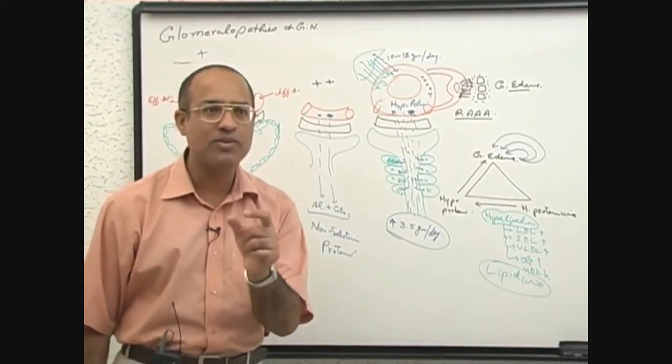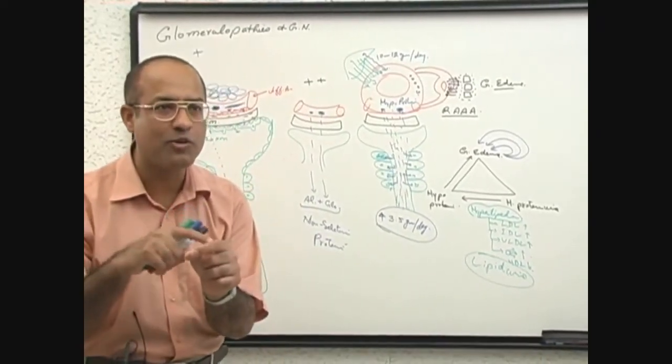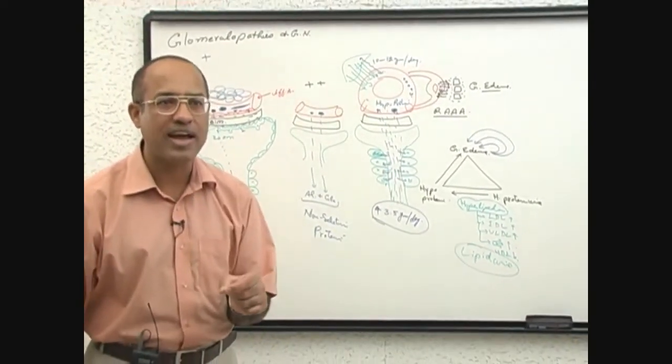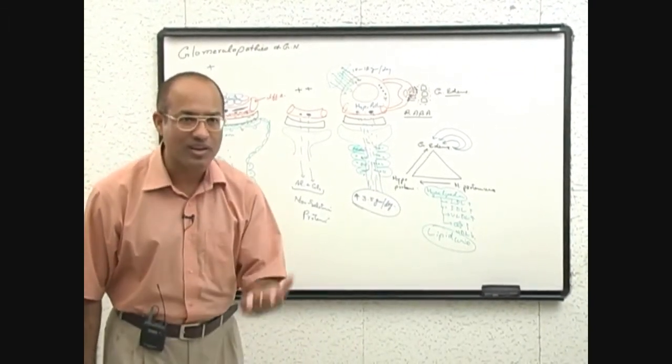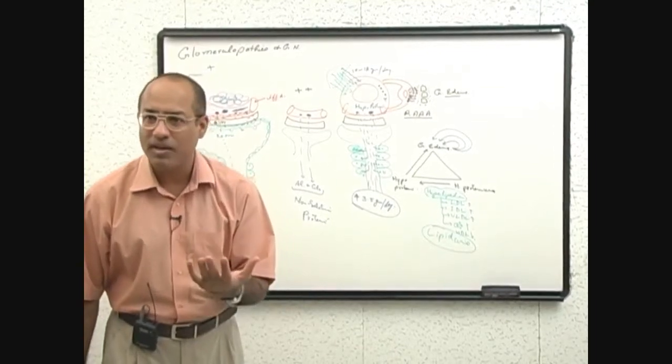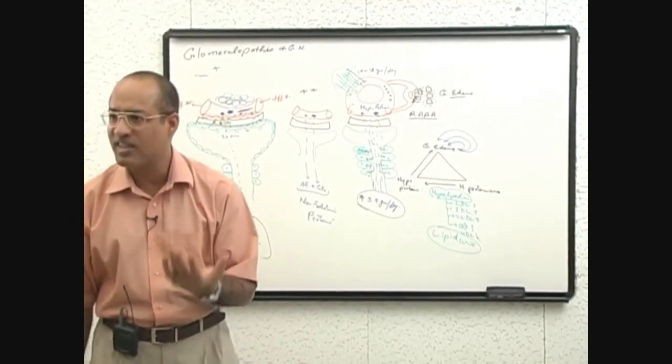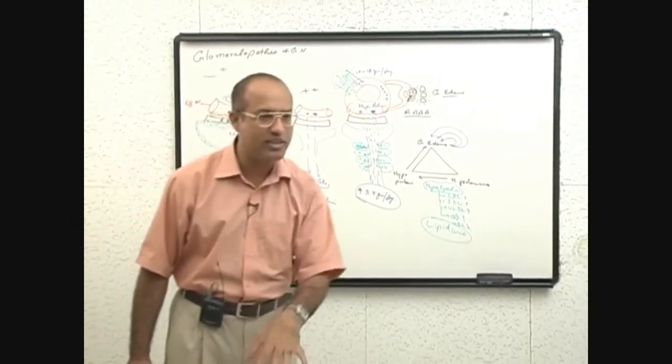So in the urine, you may find some cells with a big fat globule. We call it fat oval bodies. What are these? These are the proximal convoluted tubular cells loaded with the fat shed into urine.